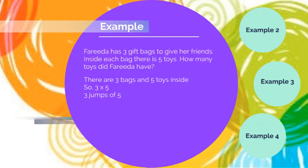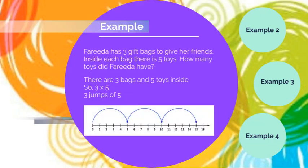There are three bags and five toys inside. So three jumps of five. What is three jumps of five? Three times five which equals to 15.